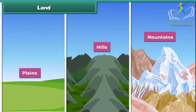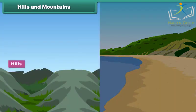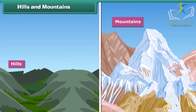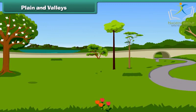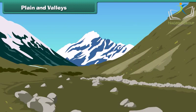Come, let us learn about them. Friends, hills and mountains are naturally raised parts of the Earth's surface. But look here carefully — you will notice that a hill is smaller than a mountain. An open field or land with an even surface is known as a plain. A valley is the land mass between two hills or mountains. A valley may be flat, V-shaped or even U-shaped.